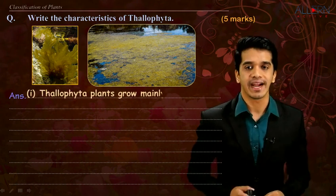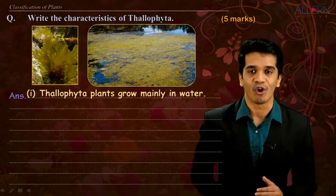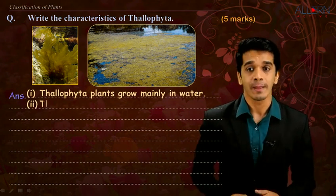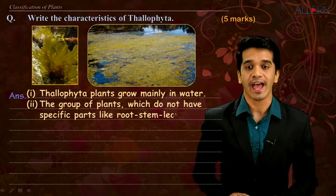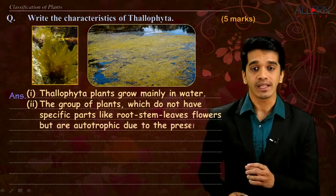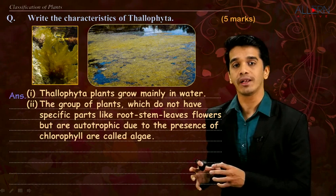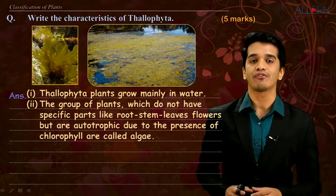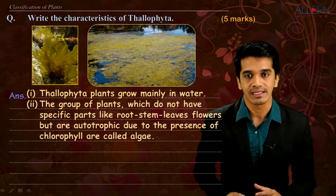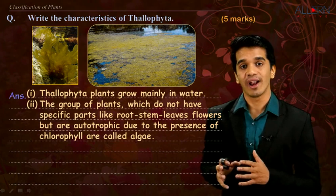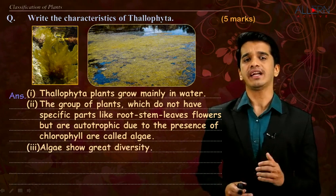The first point says that thallophyta plants grow mainly in water. The second point says that the group of plants do not have specific parts like root, stem, leaf, or flower, but are autotrophic due to the presence of chlorophyll inside the chloroplast, and are called algae. Algae show greater diversity — there are different types.